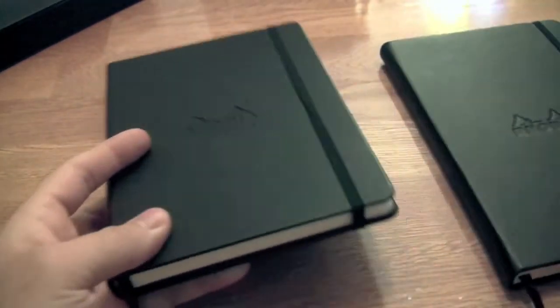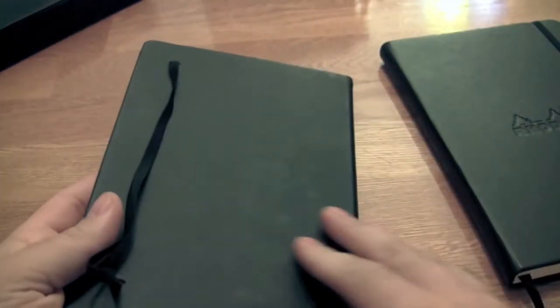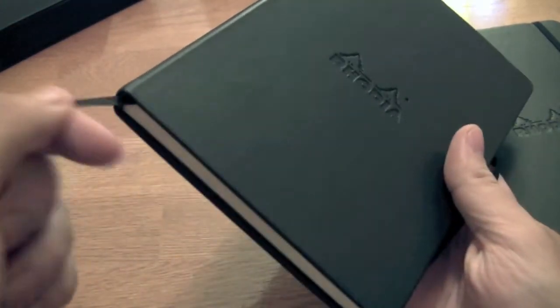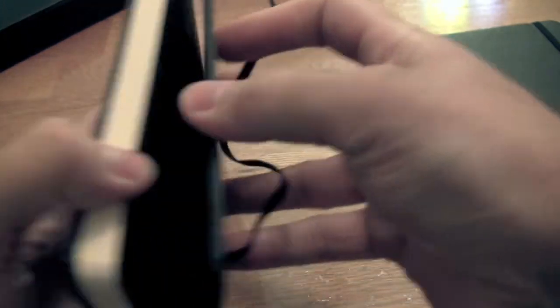But the main differences are this is the old ruled one. It's got no logo on the back. It's got the Rhodia embossed on the front. Tab, elastic strap, inner pocket on the back, all that good stuff.